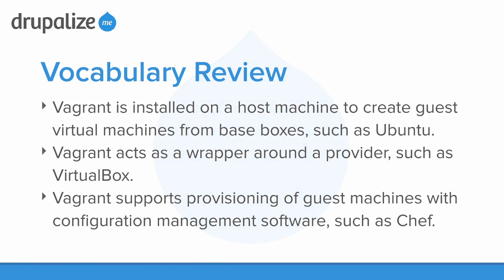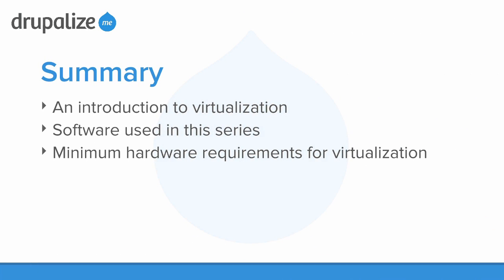Let's review all of those terms. Vagrant is installed on a host machine to create a guest virtual machine from a base box such as Ubuntu. Vagrant acts as a wrapper around a provider such as VirtualBox. Vagrant supports provisioning of guest machines with configuration management software such as Chef. To summarize quickly what we've talked about in this lesson: we've done an introduction to virtualization, we've talked about the software we'll be using in this series, and I've also talked about the minimum hardware requirements for virtualization.